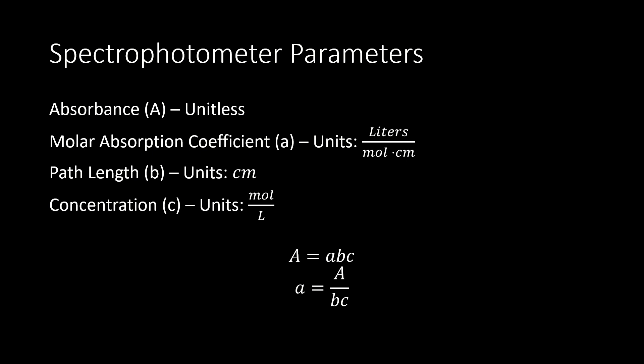For the molar absorption coefficient, you'll be asked to solve for it for each different solution. The units end up being liters per mole per centimeter, or inverse molars per centimeter. The path length is the amount of length a beam of light passes through the sample — our test tubes have a diameter of one centimeter, so little b equals one centimeter. When solving for the molar absorption coefficient, little a equals absorbance divided by b times c, where b is one centimeter and concentration depends on your specific solution.